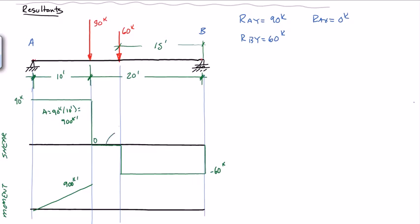We go up to 900 kip feet. Because the area here is 0, the change in moment is 0. So we stay at 900. And the area here is 15 feet times 60 kips, and it's a minus 60 kips, so it's a minus 900 kip feet. So then we drop back down to 0.